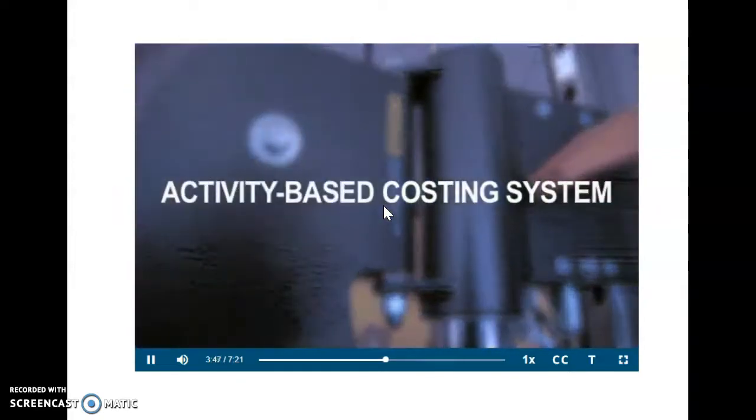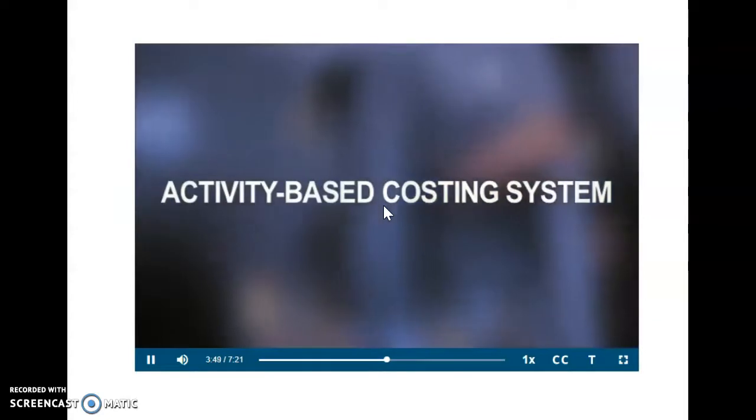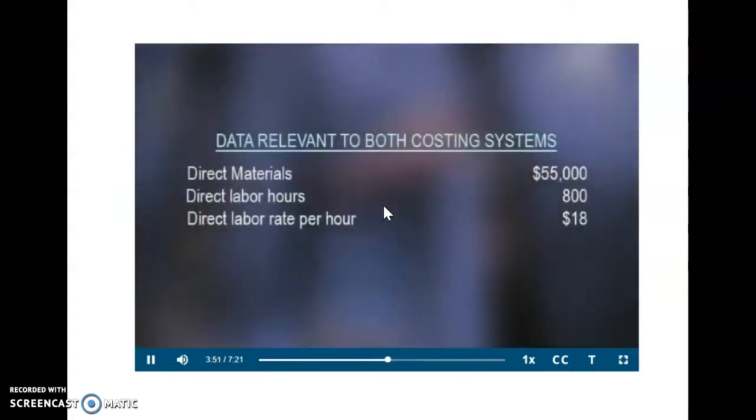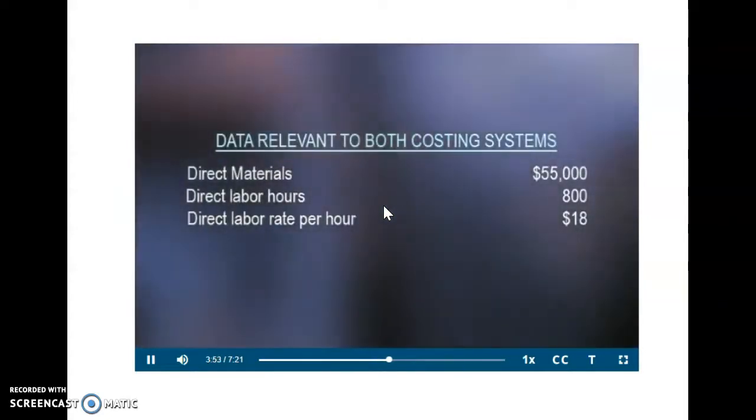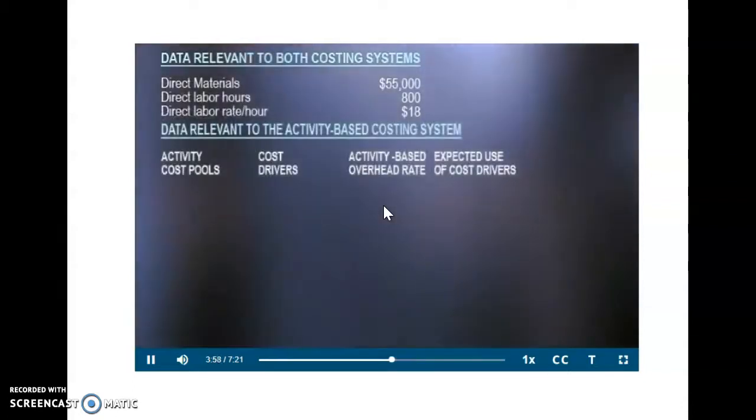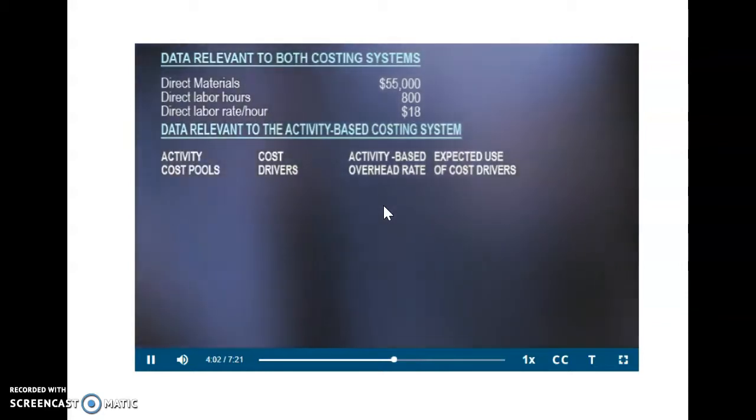Now let's look at this using an activity-based cost system. Starting out again, we've got our data that is relevant to both costing systems. Then our data relevant to the activity-based cost system. Instead of a flat rate of 300%, things get more detailed.